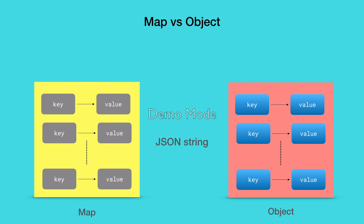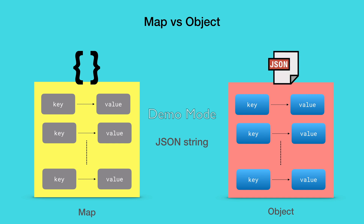The fourth difference is in the way you convert them into a JSON string. Since map is a pure hash table, there is no support for JSON directly. You need to provide your own parser to convert a map into a JSON string. But with objects, a quick advantage you get is the direct support to turn them into a JSON string using JSON.stringify.